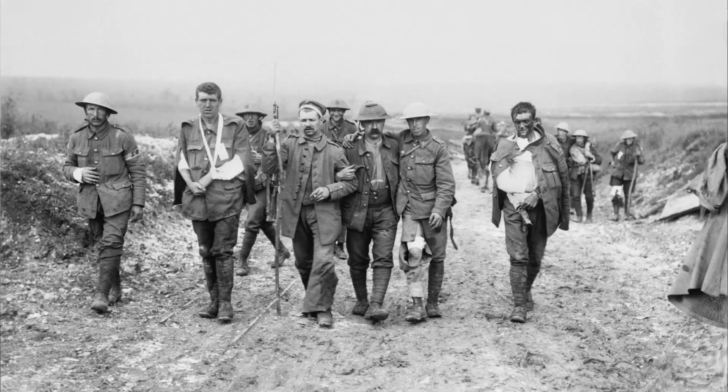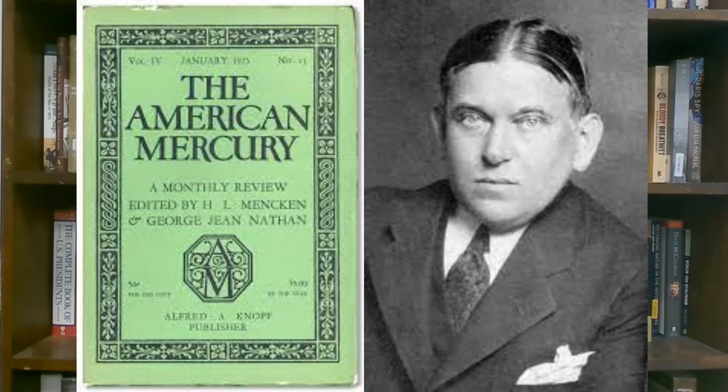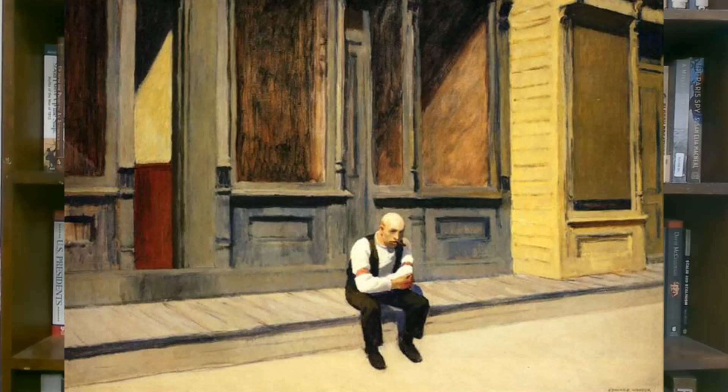Modernism rejected the certainty and optimism of Enlightenment thinking, and many modernists rejected traditional religious beliefs. Modernism in general includes the activities of those who felt traditional forms of art, architecture, literature, religious faith, philosophy, and social organization were becoming ill-fitted and outdated. Alienated writers such as H.L. Mencken, who published the magazine 'American Mercury,' attacked Christian fundamentalism, American politicians, and small-town America.